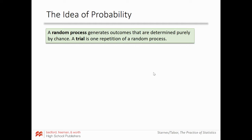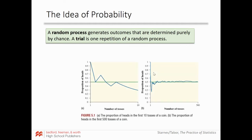Now we're going to look at a graph illustrating the idea of the Law of Large Numbers. It shows how many tosses we do. The x-axis is the number of tosses and the y-axis is the proportion of heads.